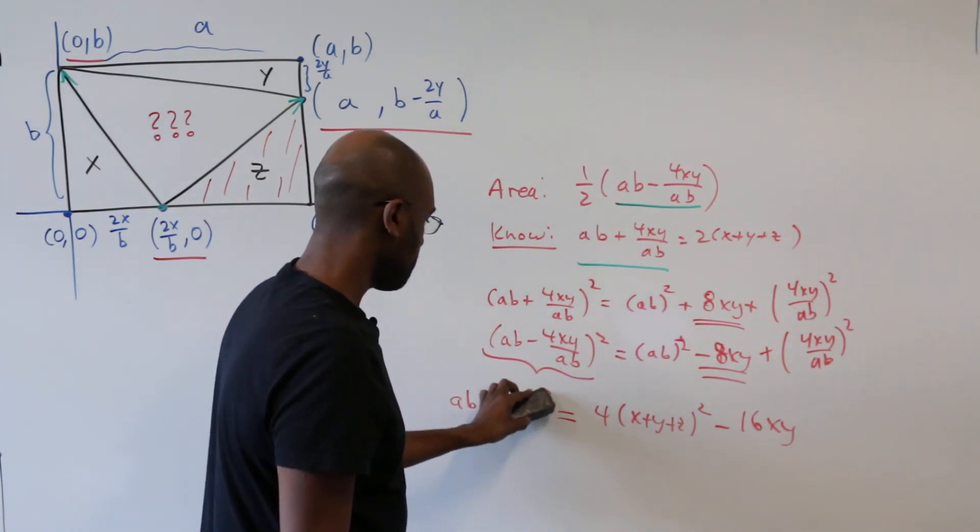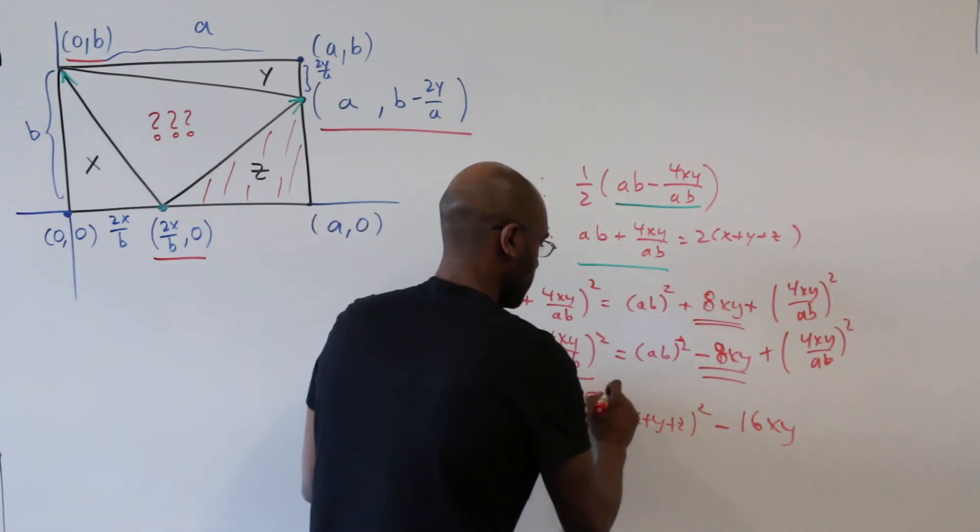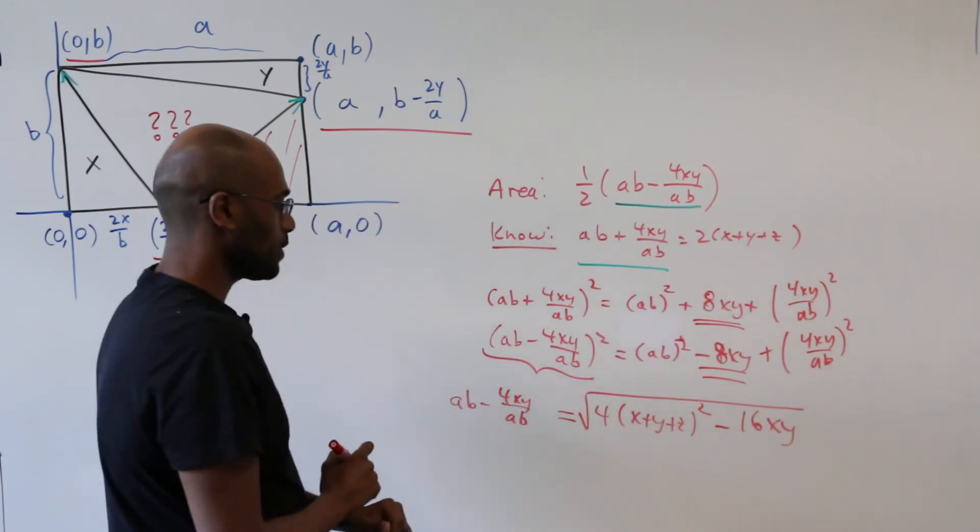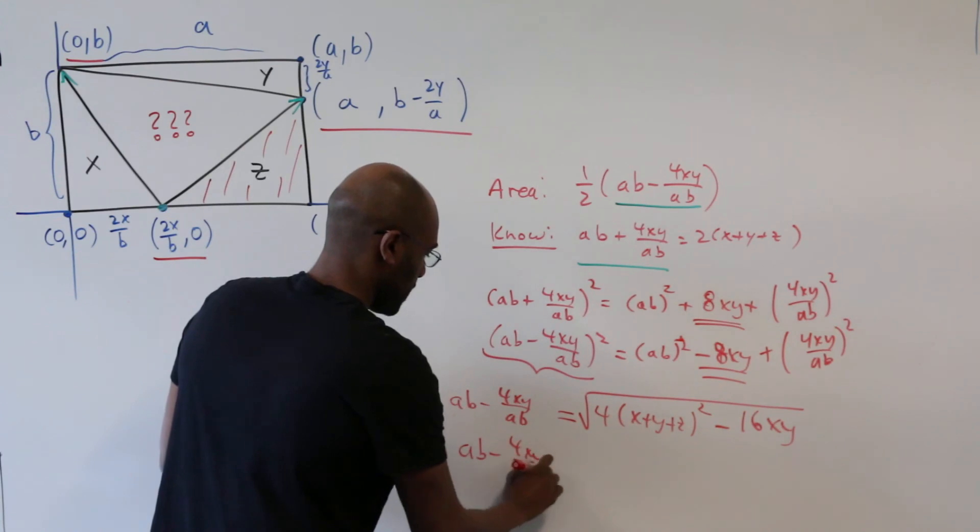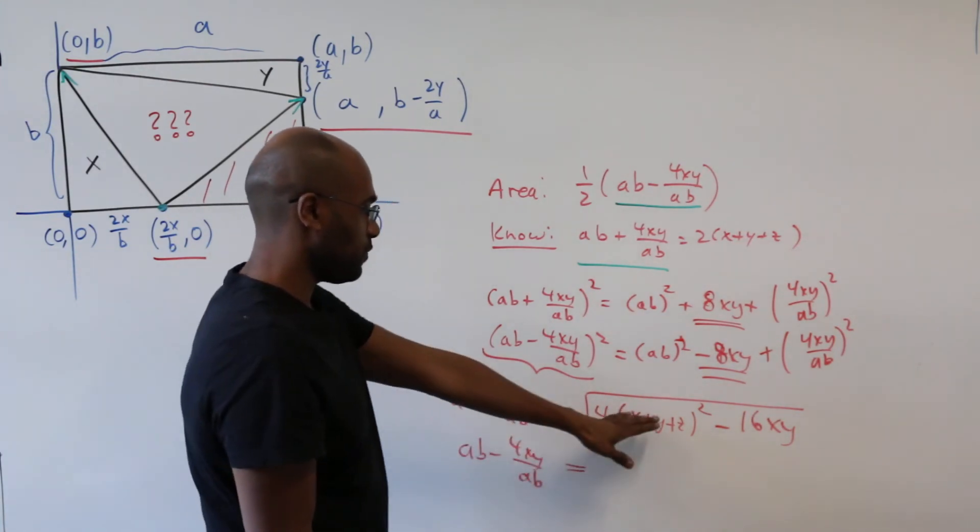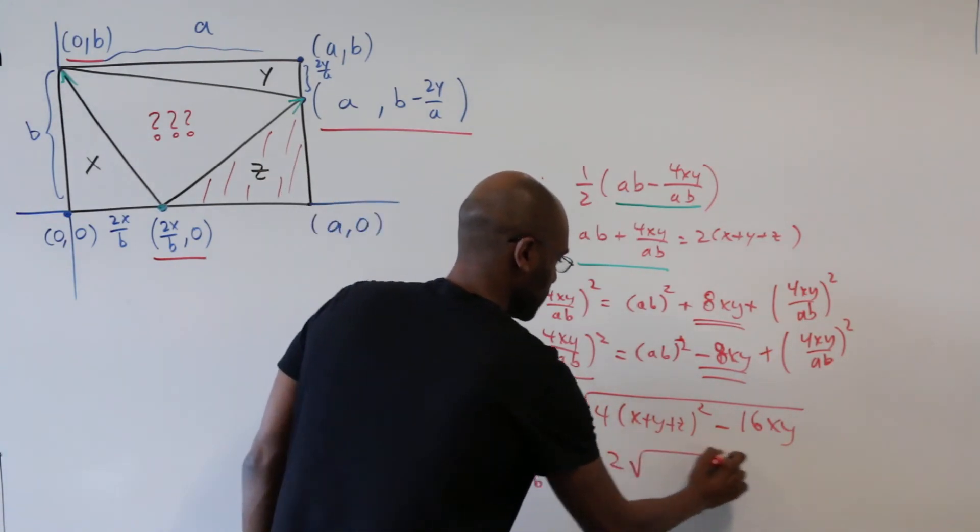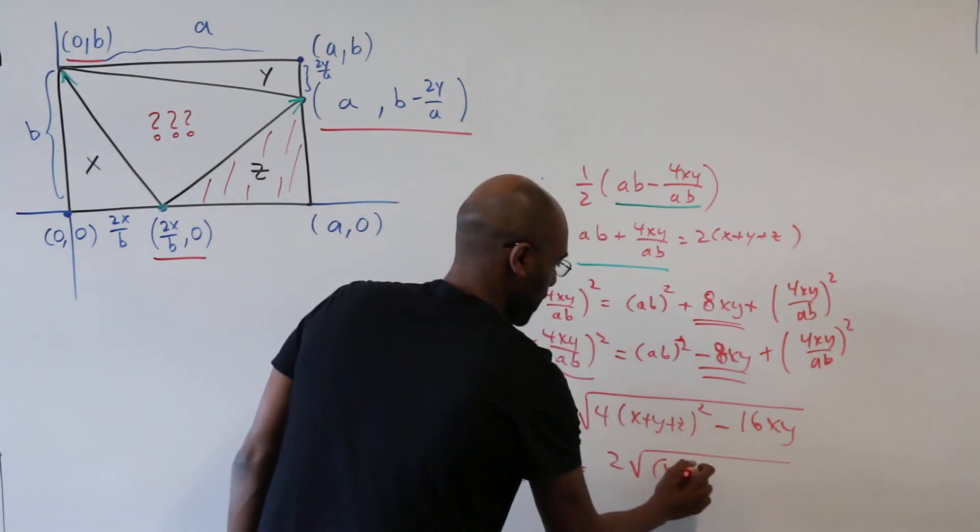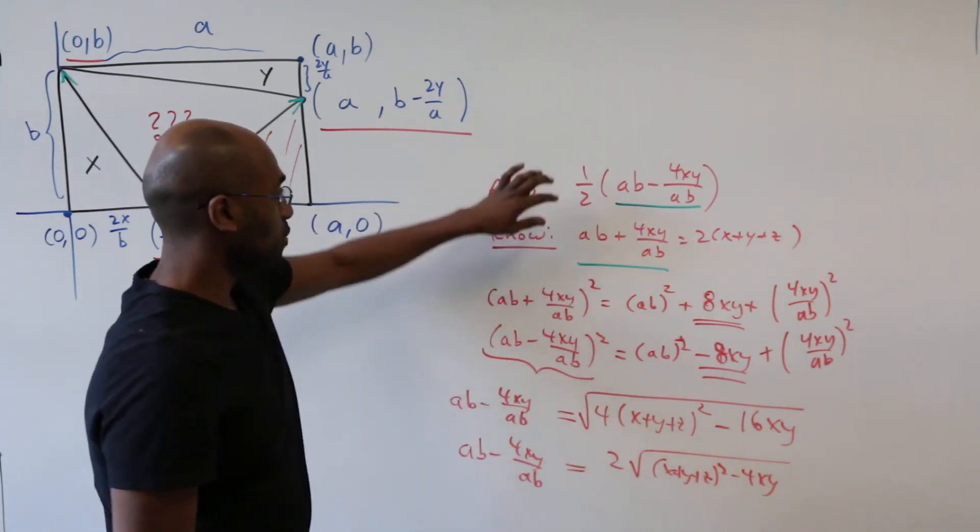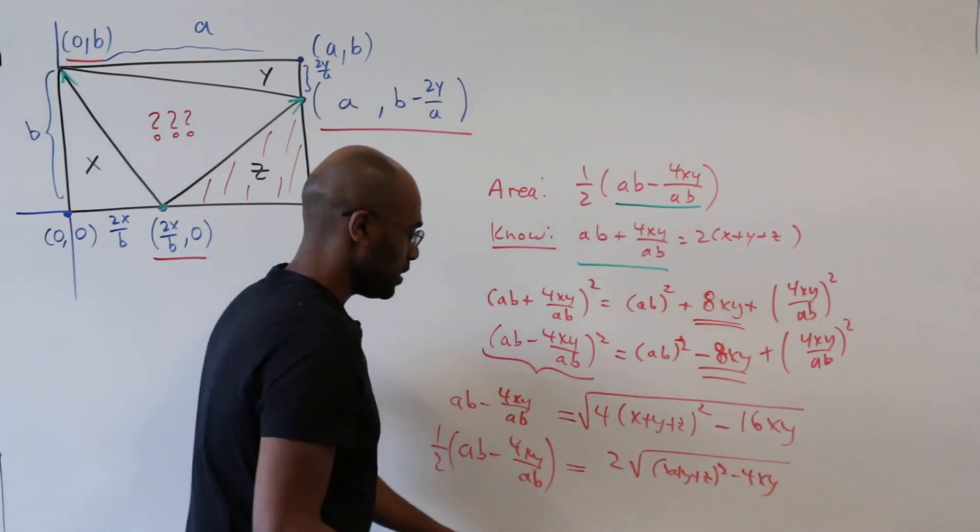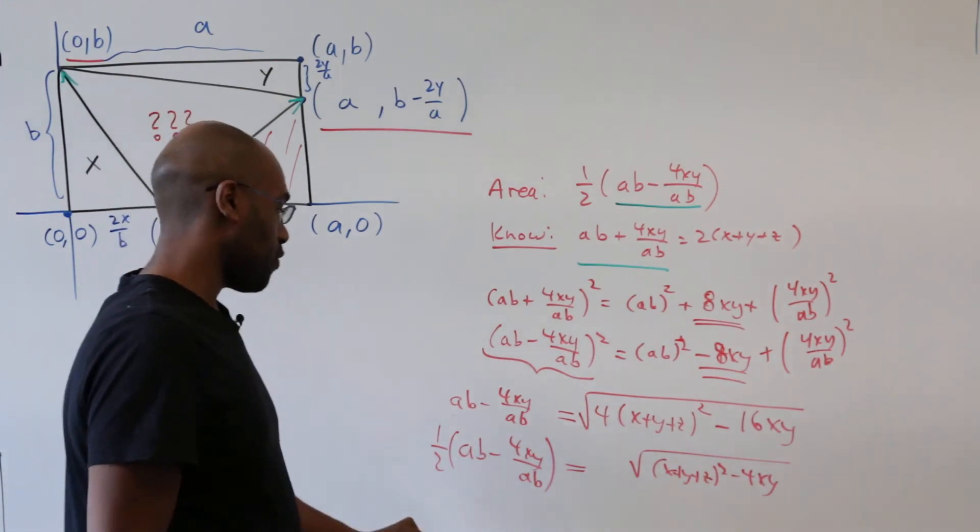So now if we want to figure out what the value of ab minus 4xy over ab is we can take square roots. So we get the square root of this quantity here. Okay, so subsequently we have that the quantity we're interested in is the square root of this thing. We can factor out a 4 which will come out as a 2 here. We'll get 2 times the square root of (x + y + z) squared minus 4xy. And so the area which is half of this is the square root of the quantity (x + y + z) squared minus 4xy.